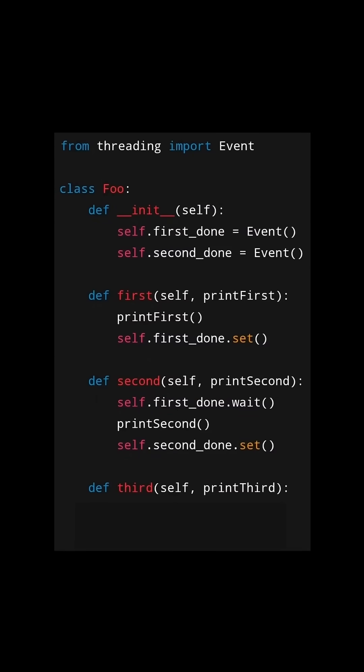If a thread comes in and calls the second method, we wait until the first_done event is finished. Once the first_done event is set and released, we move on to the next execution. We print second, and finally, set the second_done event. This will release any waiting threads on this event.